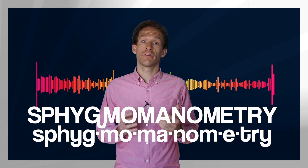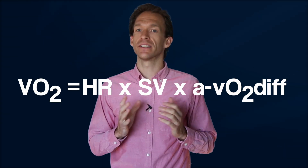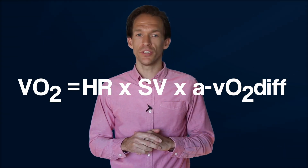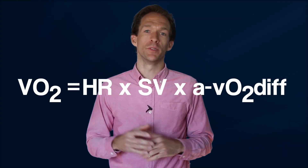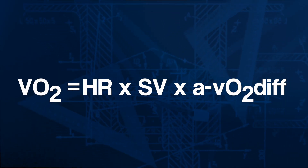Measuring stroke volume is fairly difficult, while measuring heart rate is pretty simple. What's really difficult is the pronunciation of the word sphygmomanometry — the measurement of blood pressure — but once you understand it, the underlying physiology is actually fairly easy. The number one equation in exercise physiology is the Fick equation; it's like duct tape — you can use it for almost any problem.